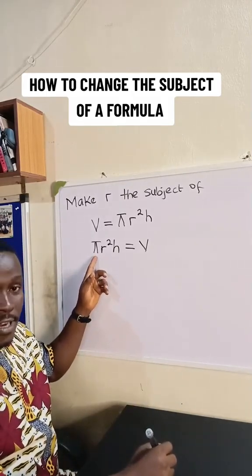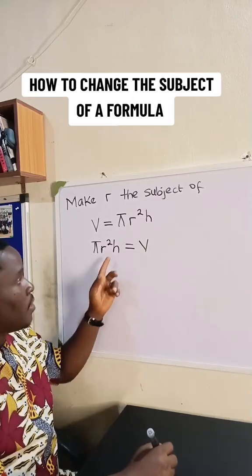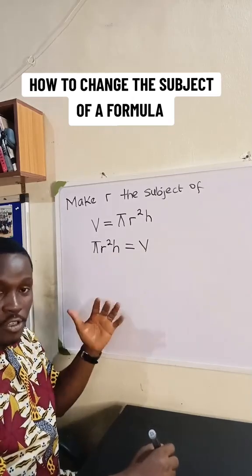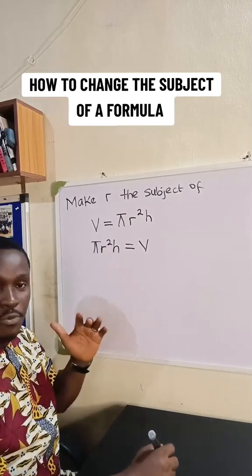In this case, we have pi is on the left. It's not supposed to be there. h is on the left. It's not supposed to be there. Square is on the left. It's not supposed to be there.